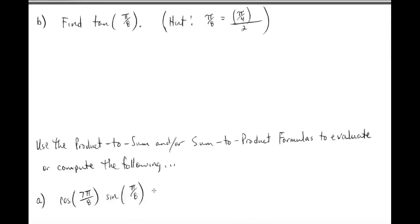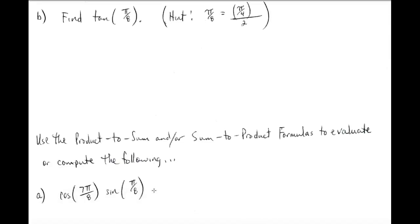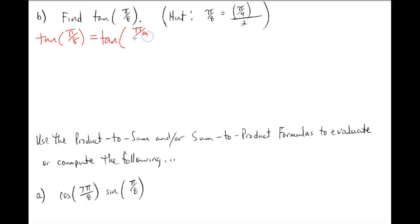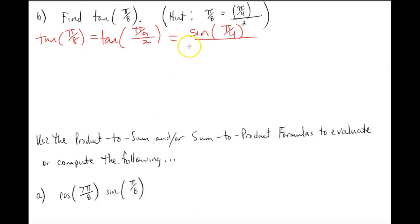Now we'll find the exact value of tangent of π/8. The hint is that π/8 can be rewritten as (π/4) divided by 2, so tangent of π/8 is tangent of (π/4 divided by 2). Using the half-angle formula for tangent: tan(x/2) equals sine(x) over 1 plus cosine(x).